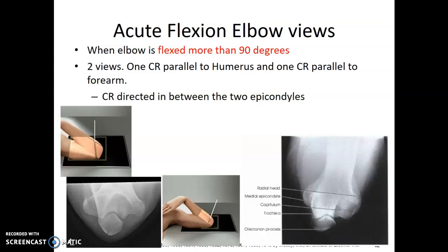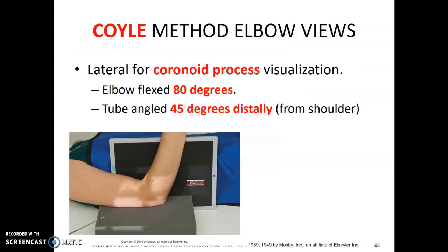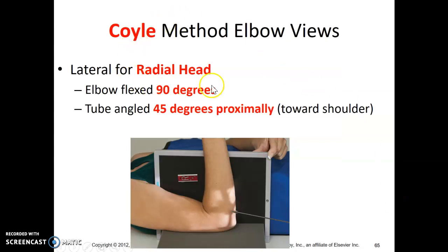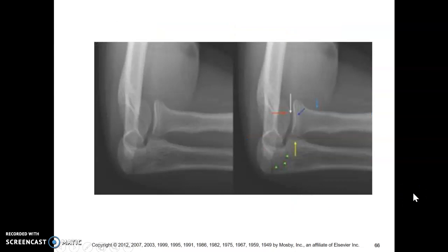Acute flexion elbows — they're in your textbook. It's when the elbow is flexed more than 90 degrees. Coil method elbow trauma views: lateral for the coronoid process — elbow flexed 80 degrees, tube angled 45 degrees distally from the shoulder. The tube comes in and projects onto your plate. 80-degree flexion is the key term I find with these questions. For the radial head, the elbow is flexed 90 degrees and the tube angle is 45 degrees proximal, toward the shoulder.